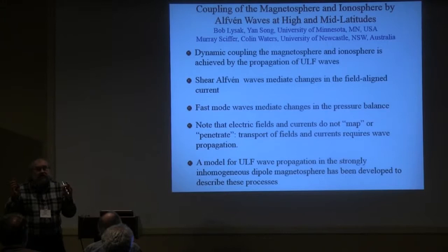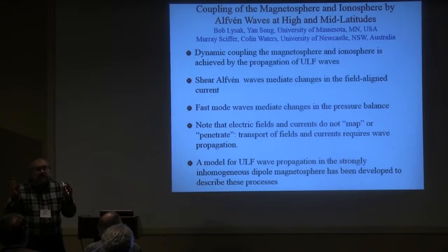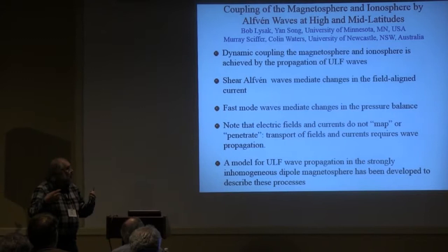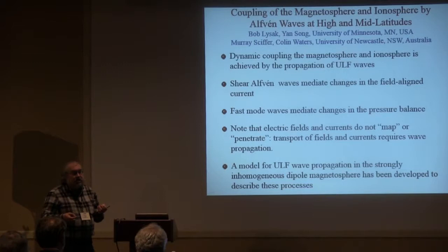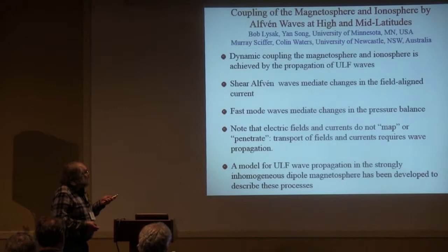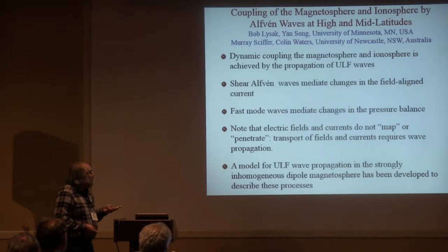My basic point is that in the magnetospheric system, the dynamic coupling of changes in the electric and magnetic fields and the field-aligned currents are all associated with the propagation of low-frequency waves — waves in the ULF wave band. The shear Alfvén wave is what mediates changes in field-aligned current. The fast-mode wave, which I'm going to emphasize quite a bit in this talk, mediates changes in the pressure balance in the plasma. The idea is that fields do not map — that is not a physical process. That's a mathematical operation that we do to compare electric fields at different altitudes.